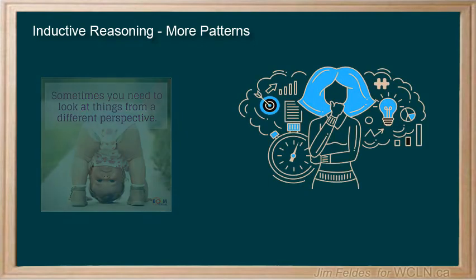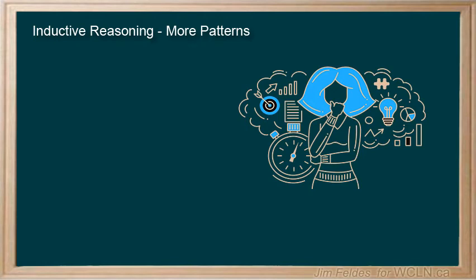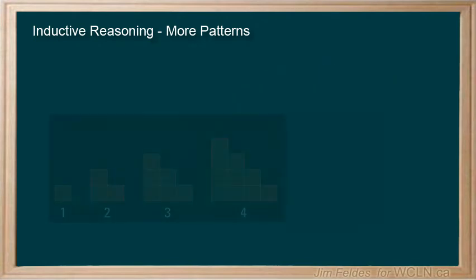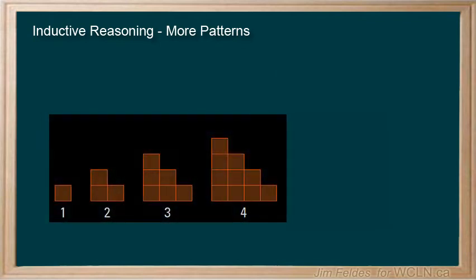Some patterns are easy to see, some less so. Sometimes the patterns are visual patterns that can also form numerical patterns, like this one. The image's number in this pattern is also the number of squares being added to the bottom row. The total number of squares can be counted to get the sequence.